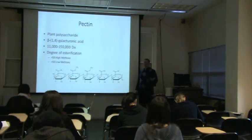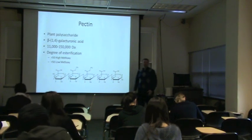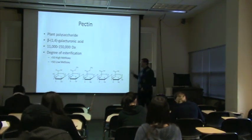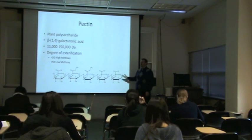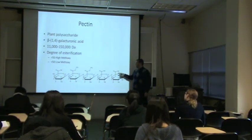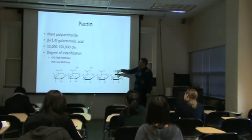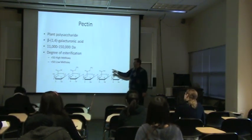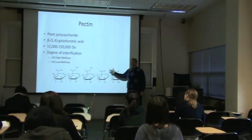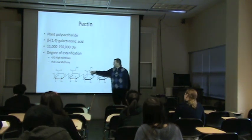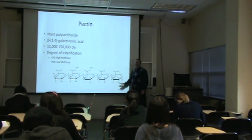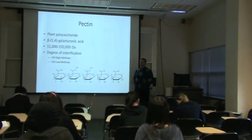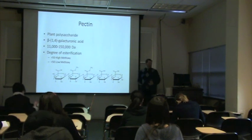The third polysaccharide investigated was pectin, which most people are familiar with. It's a plant polysaccharide made up of galacturonic acids. The important aspect is the degree of methylation. What I'm showing here would be considered a low methoxy pectin — less than 50% of the esters are esterified. If it's more than 50%, it's considered high methoxy, and the gelling properties are totally different for high versus low methoxy.